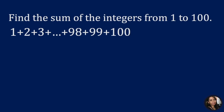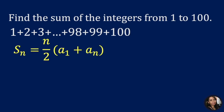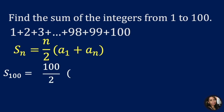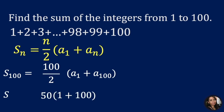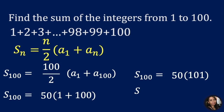Now let's answer the problem. The formula is s sub n equals n over 2 times a sub 1 plus a sub n. Since there are 100 terms, we have s sub 100 equals 100 over 2 times a sub 1 plus a sub 100. 100 over 2 is 50, our a sub 1 is 1, and our a sub 100 is 100. Continuing to solve, we get 50 times 101, and 50 times 101 equals 5050.